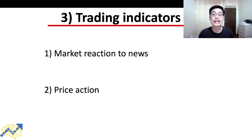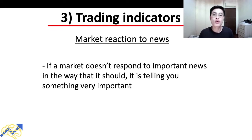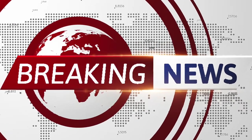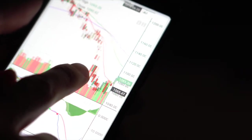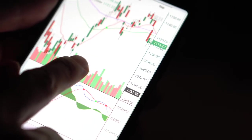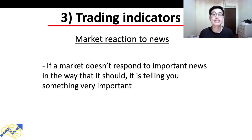The third market results lesson is the trading indicators Larry Hyde pays attention to. The first is market reaction to news. Larry Hyde mentions that if a market doesn't respond to important news in the way that it should, it is telling you something very important. For example, if bullish news is released and the stock market turns down instead of going up, this tells us the market is weak. On the other hand, if bad news is released and the market continues to go up and brush it off, this tells us the market is strong.